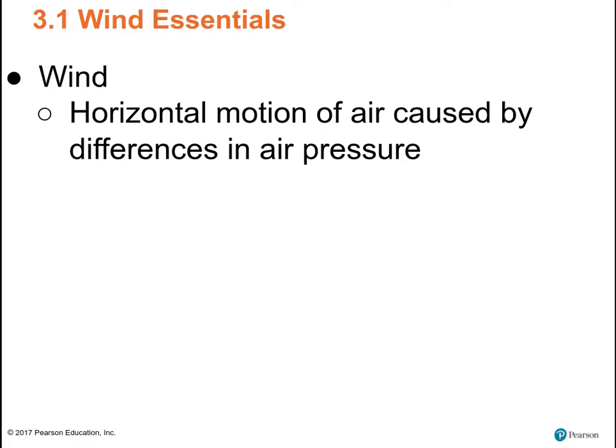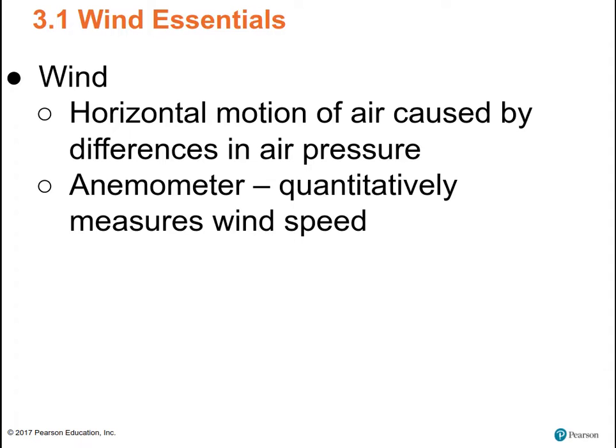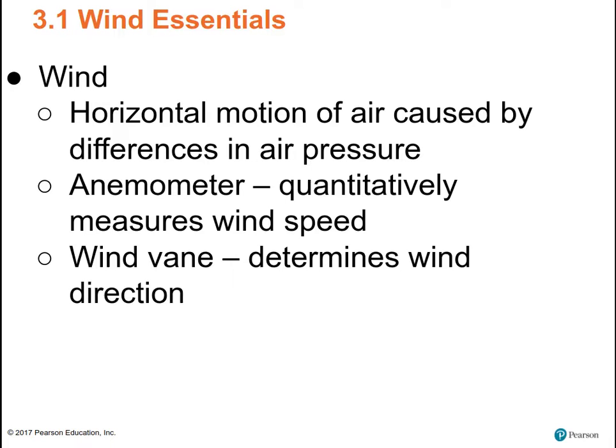Wind is the horizontal motion of air caused by differences in air pressure. If there's no difference in air pressure between two places, there's no wind. We use an anemometer to measure wind speed, and a wind vane tells us the direction the wind is blowing from, because that's the way winds are named.